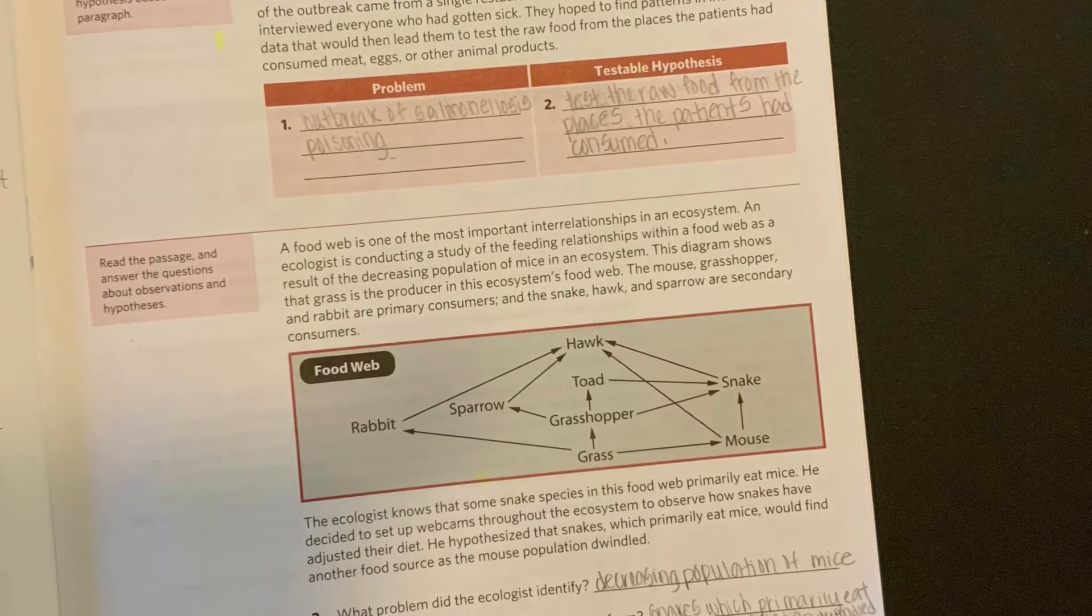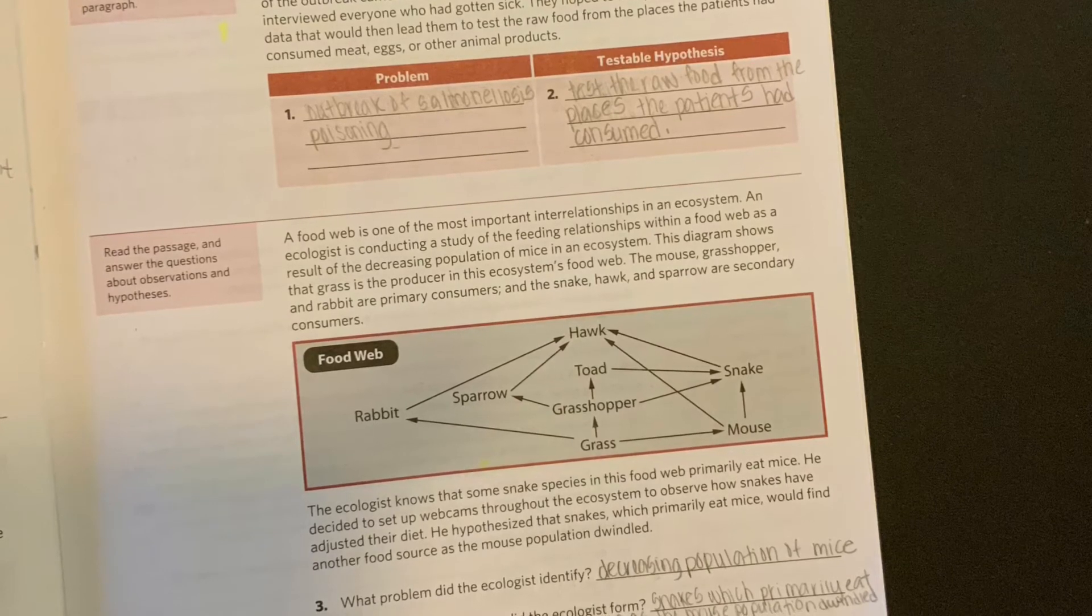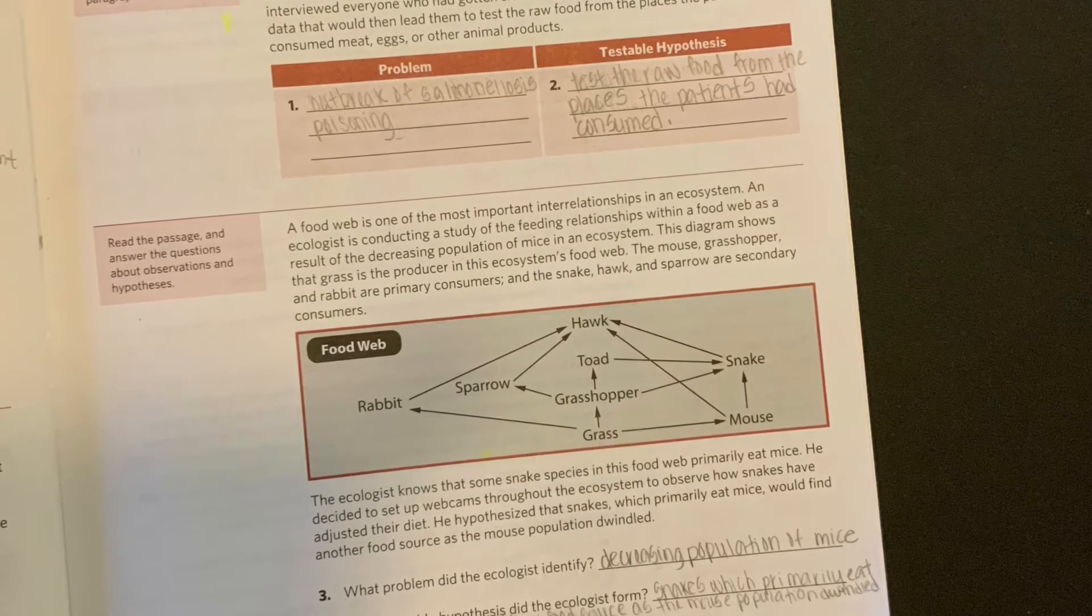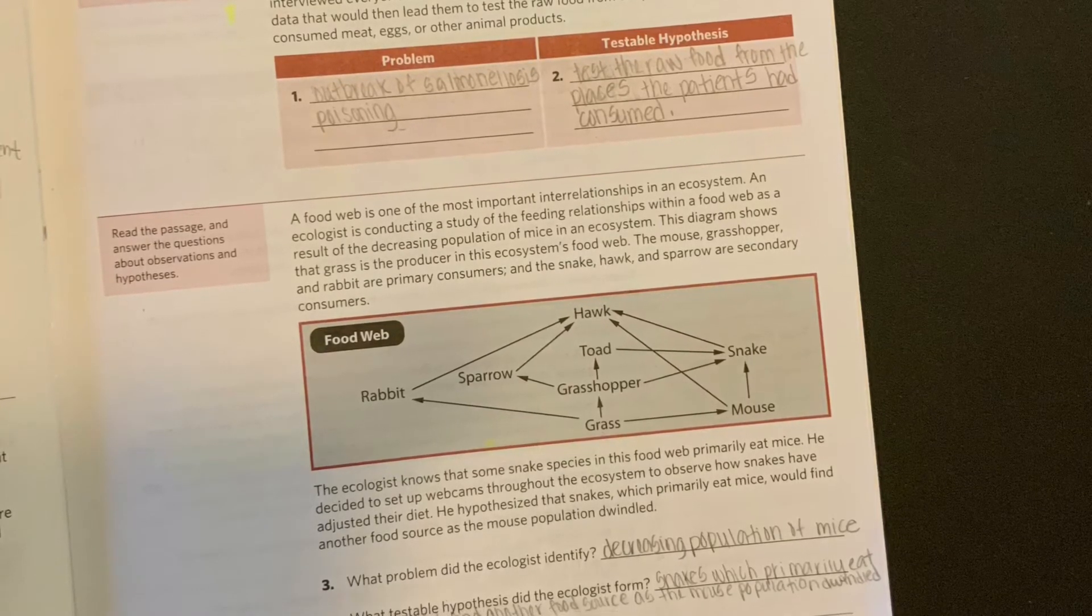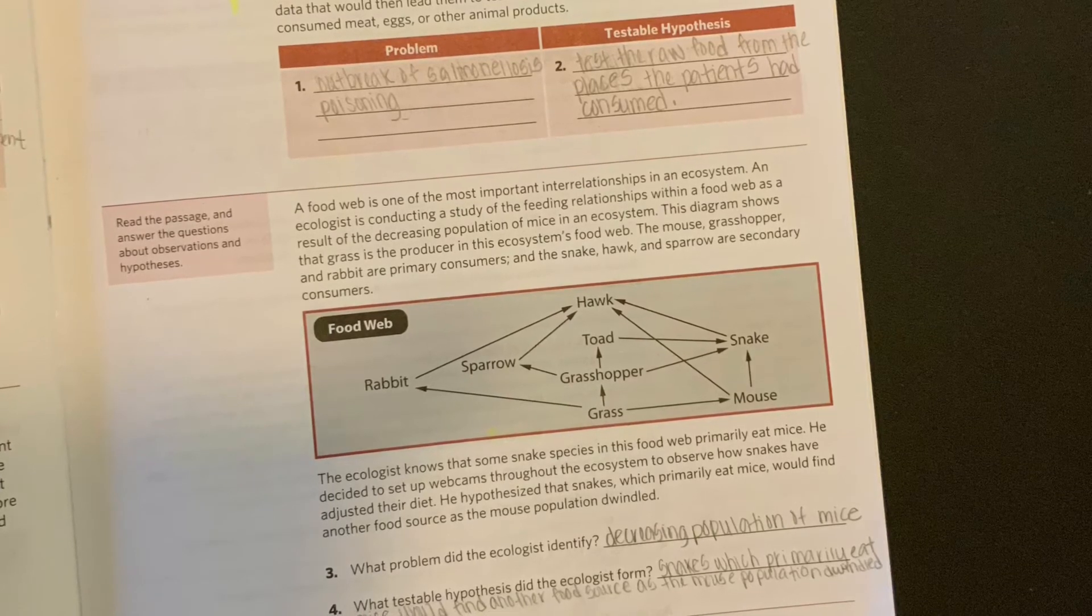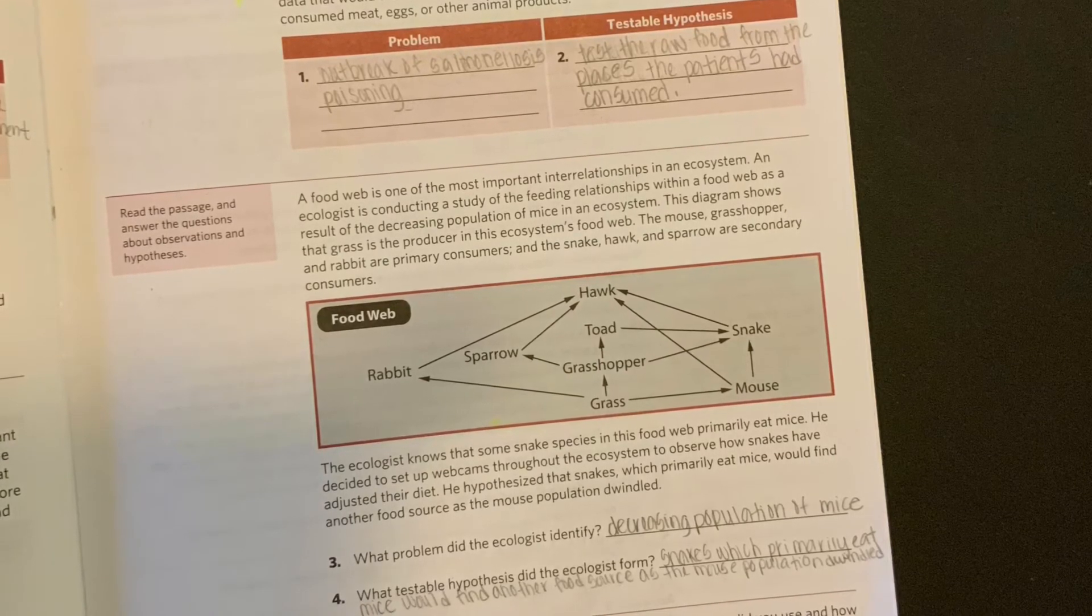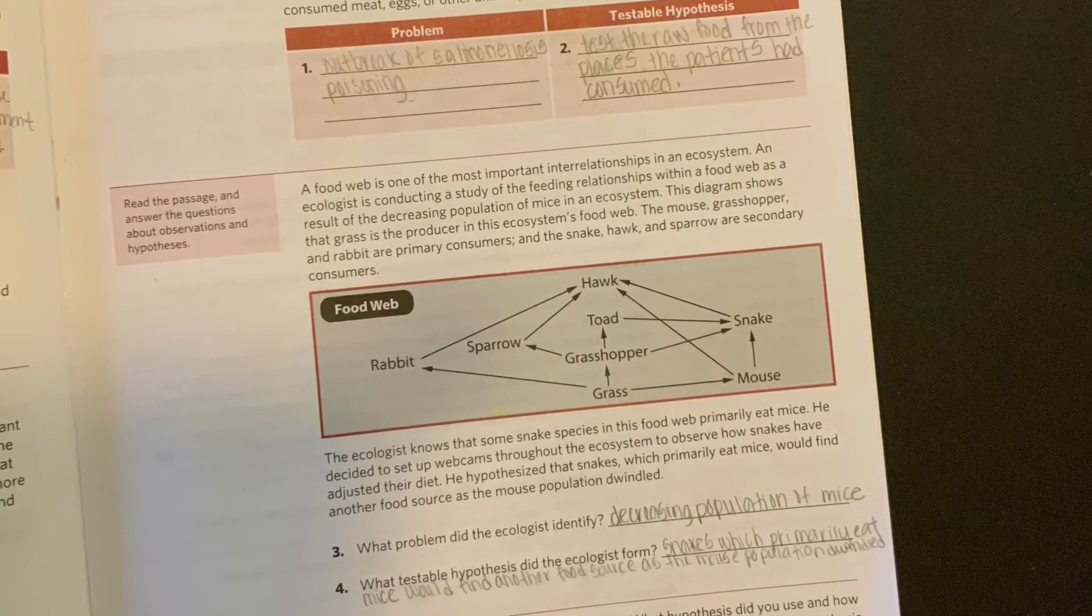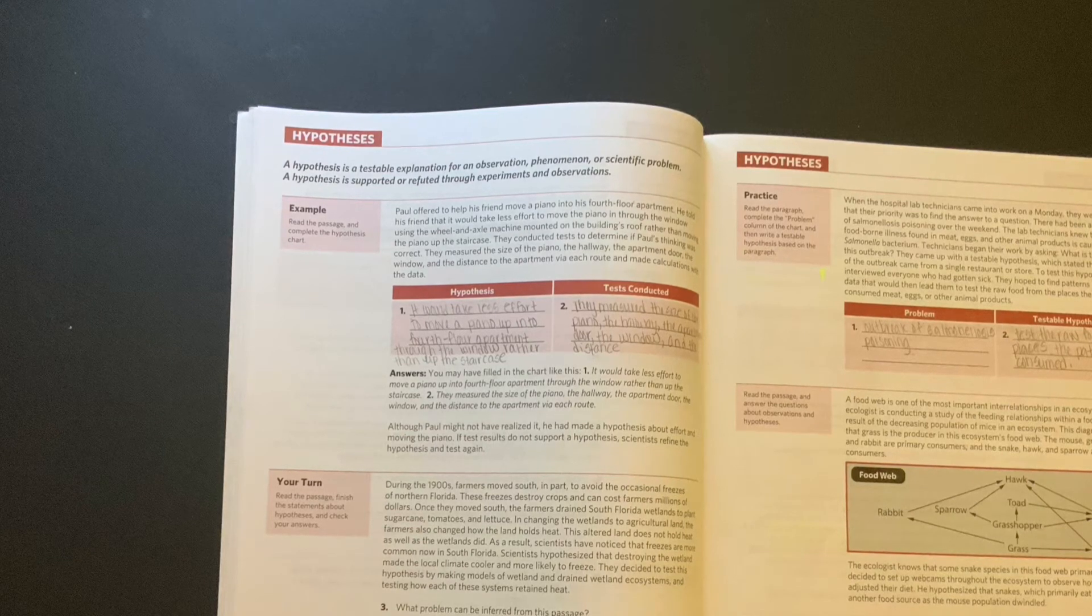Okay, so we are on our last passage. Let's go ahead and get into it. A food web is one of the most important interrelationships in an ecosystem. An ecologist is conducting a study of the feeding relationships within a food web as a result of the decreasing population of mice in the ecosystem. This diagram shows that the grass is the producer in the ecosystem's food web. The mouse, grasshopper, and rabbit are primary consumers, and the snake, hawk, and sparrow are secondary consumers. Okay, so right down here we have a food web and you can see how the rabbit attaches to the hawk, and then you see how the snake also attaches to the hawk, the mouse eats the snake, so everything goes in a way and this is the food web that they are actually showing. So this is an example of a problem, a scenario that you can see on the GED test.